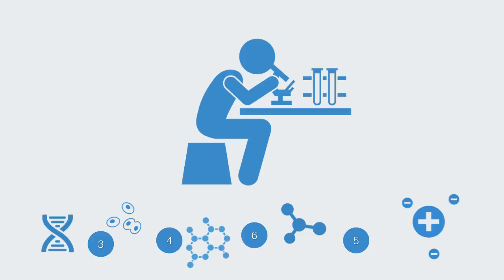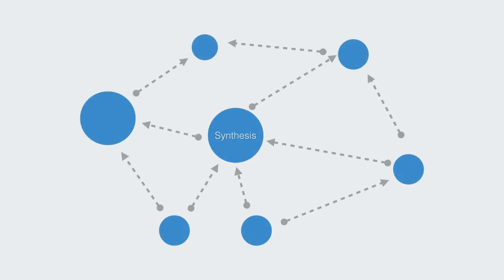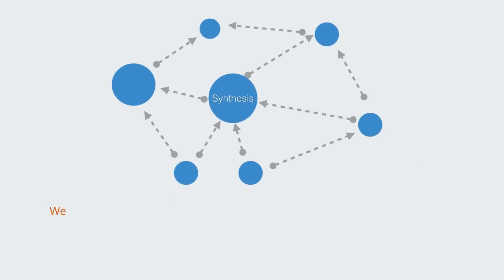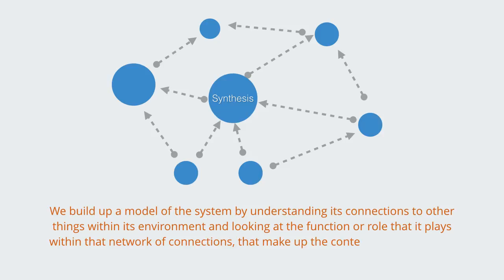Synthesis, in contrast to analysis, is the process of reasoning whereby we try to understand something not by taking it apart, but instead we try to look at the system in relation to its environment. So here we're reasoning upwards instead of downwards. We're building up a model of the system by understanding its connections to other things within its environment, and looking at the function or role that it plays within that network of connections that makes up the overall context or environment.